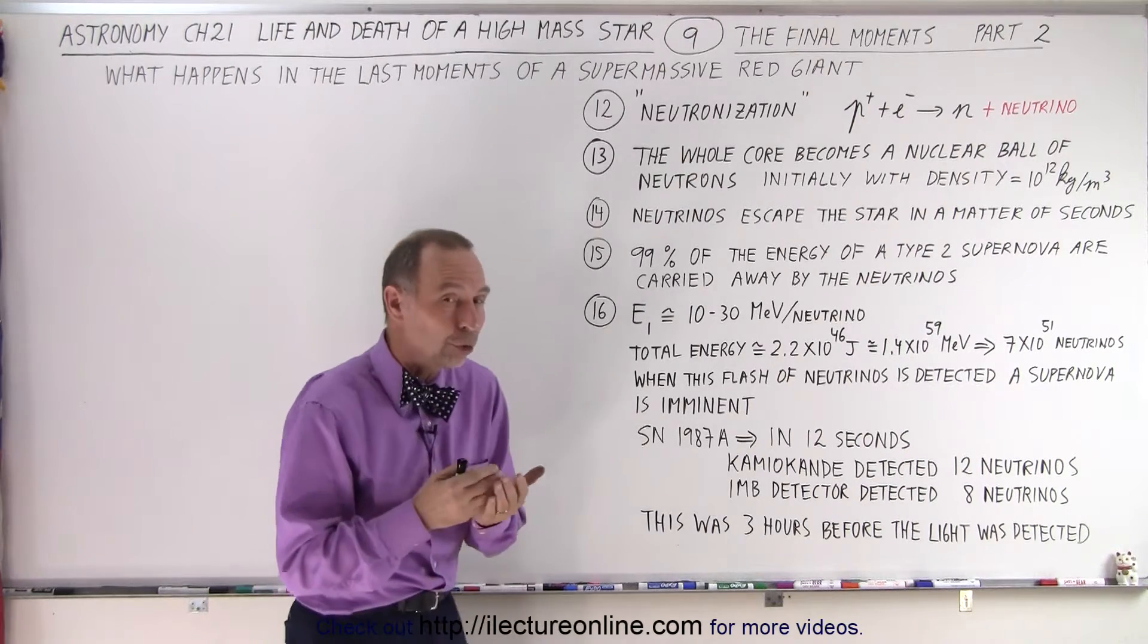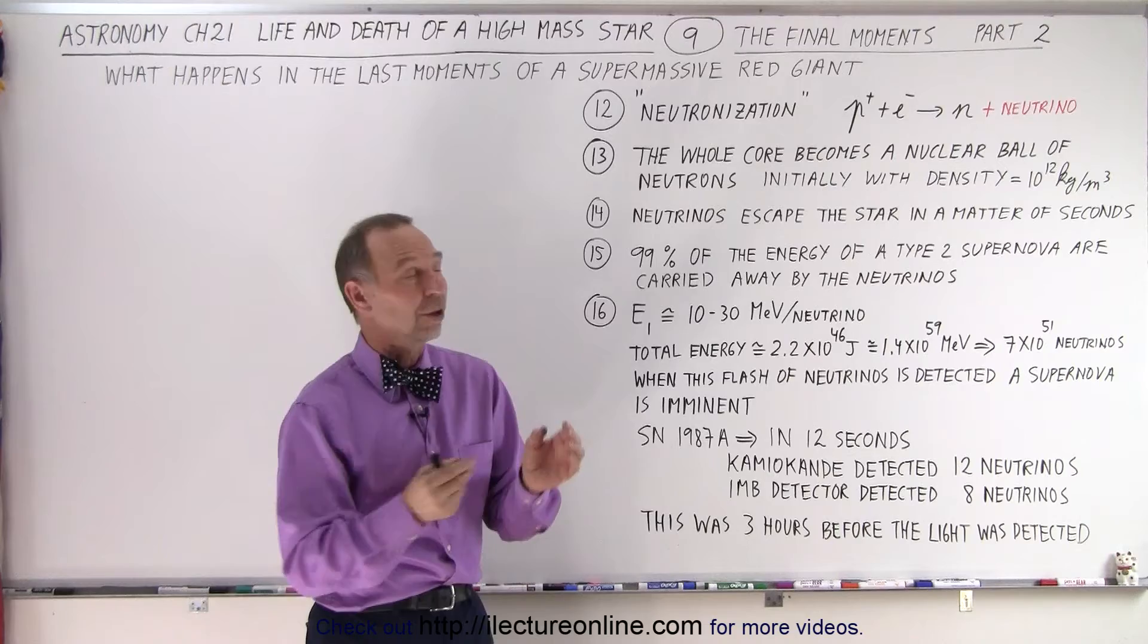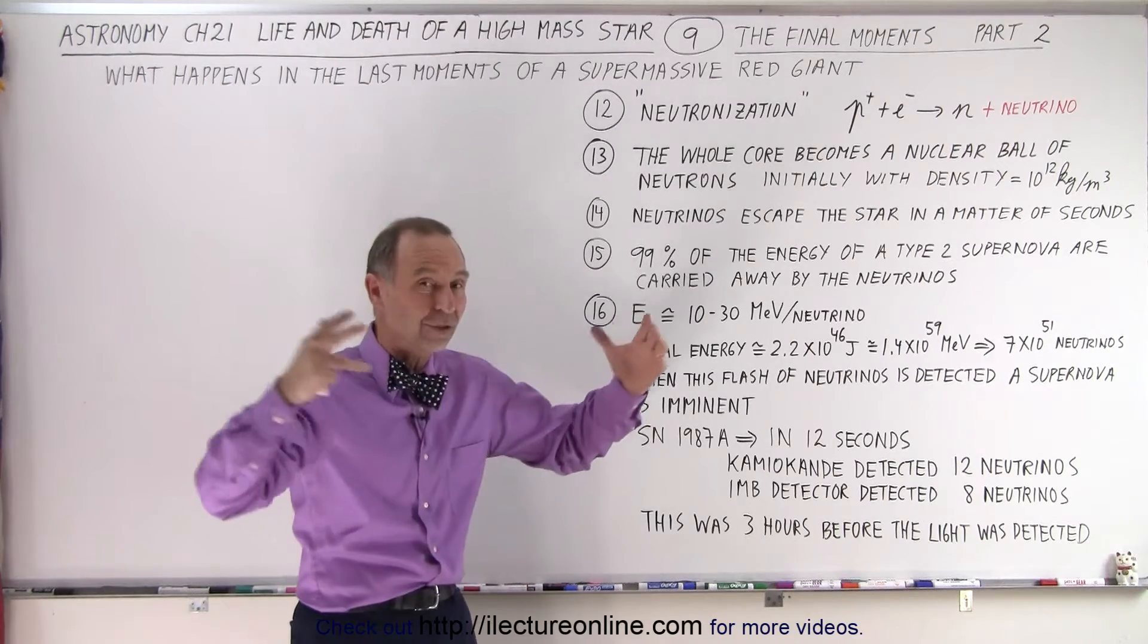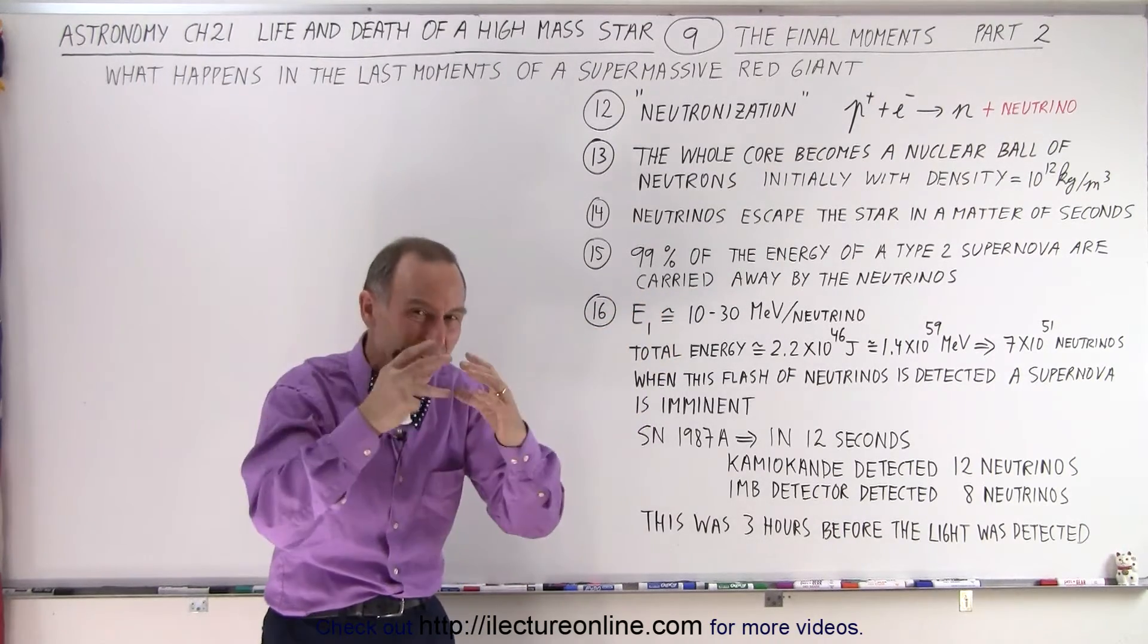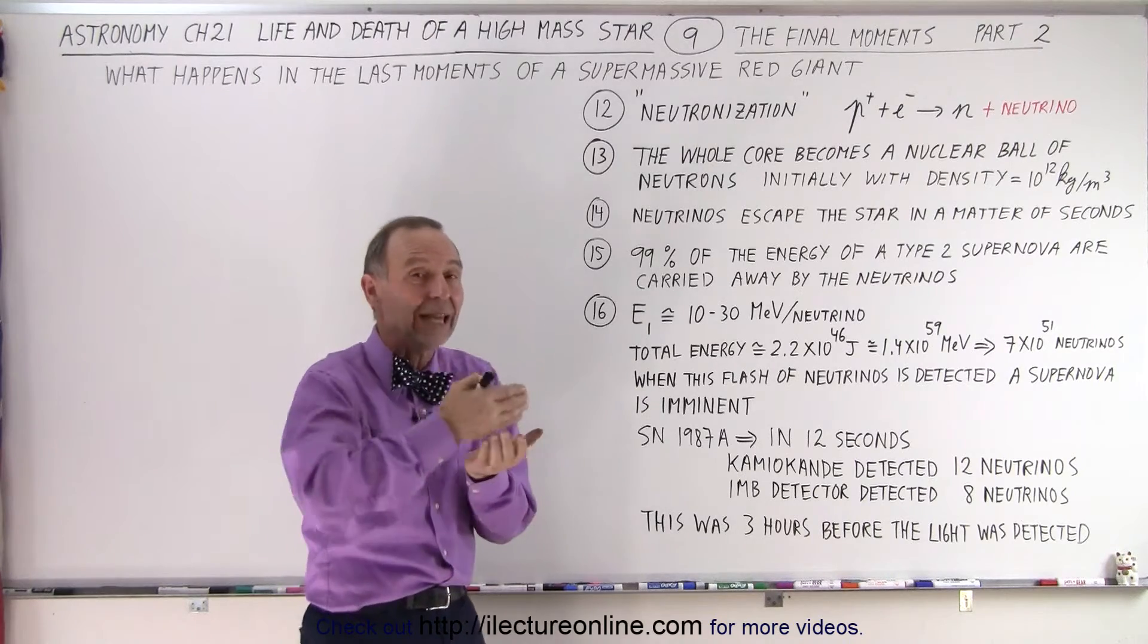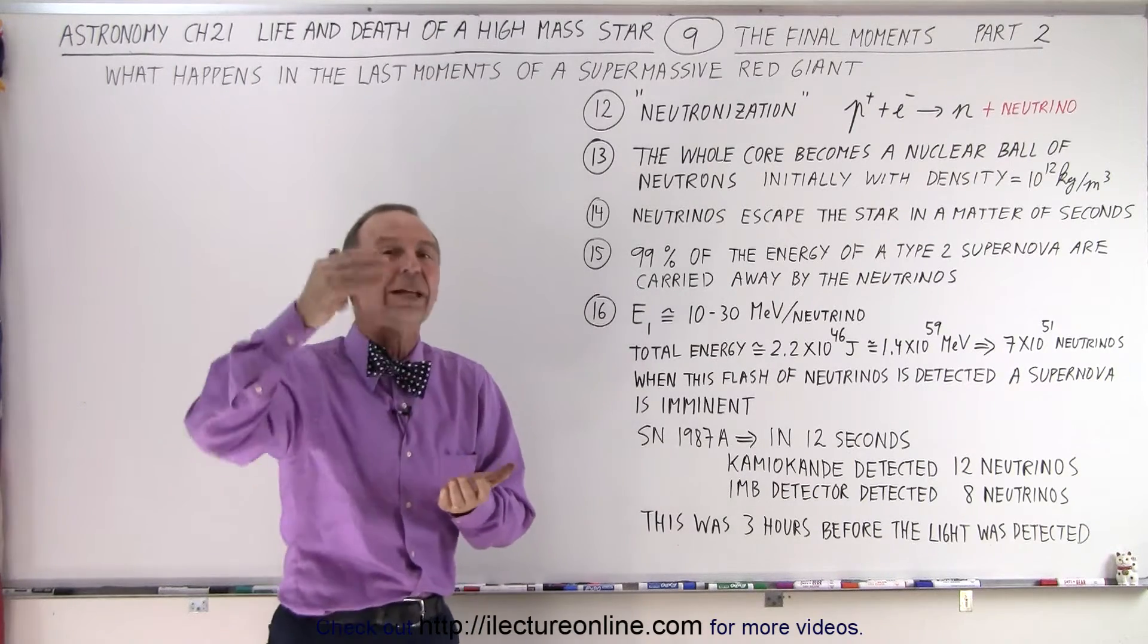Well we have what we call Neutronization. In other words, the protons and electrons because of the enormous density are being pushed together into a little neutron and as a result a neutrino gets expelled.